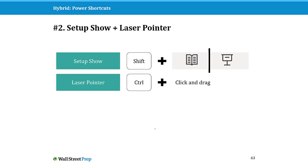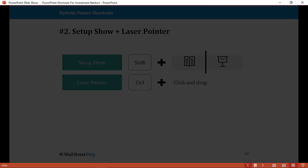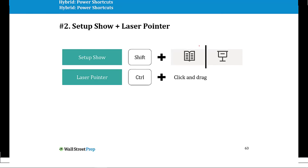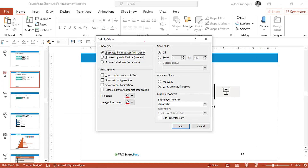A second set of cool power hybrid shortcuts is the setup slideshow shortcut, which is also how you get to your laser pointer. If you hold Control and click and drag with your mouse, you get the laser pointer — great for webinars or training. If you normally click the Reading View icon you get the reading view, but if you hold the Shift key and click Reading View, you open up your Setup Slideshow options.